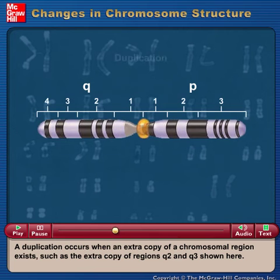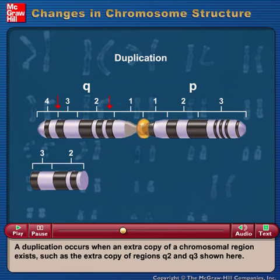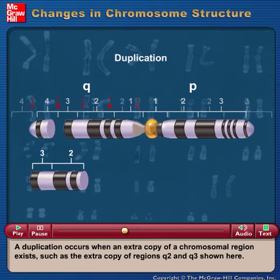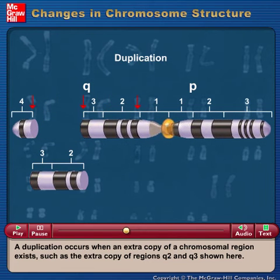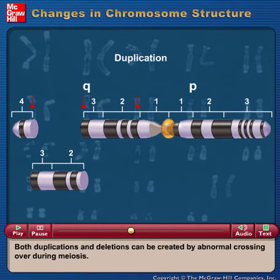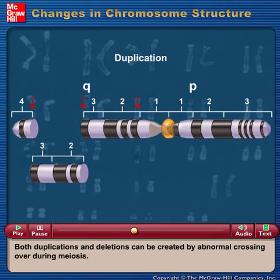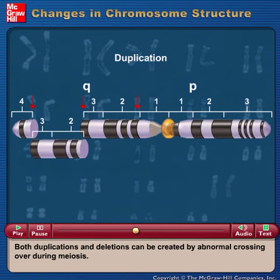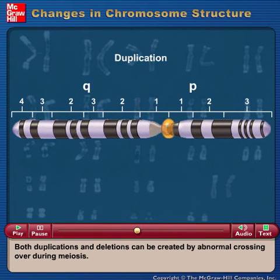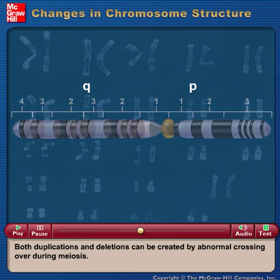A duplication occurs when an extra copy of a chromosomal region exists, such as the extra copy of regions Q2 and Q3 shown here. Both duplications and deletions can be created by abnormal crossing over during meiosis.